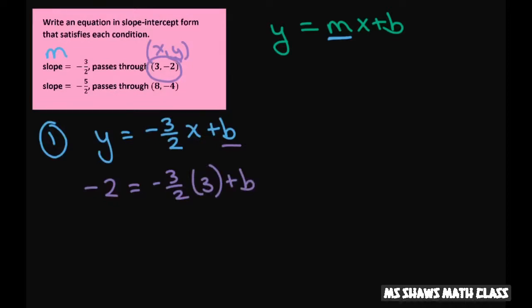Okay, and then the third step is you solve for b. So this is negative 2 equals negative 9 halves plus b. So add 9 halves to both sides and that's going to be your b.